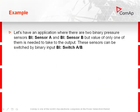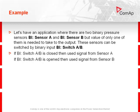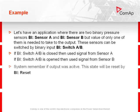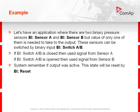Now we use these functions in an example. Let's have an application where there are 2 binary pressure sensors: binary input sensor A and sensor B. Only one of them is needed at the output at a time. These sensors can be switched by binary input switch AB. If switch AB is closed, the signal from sensor A is used. If switch AB is open, the signal from sensor B is used. The system remembers if the output was active, and this state will be reset by binary input reset.